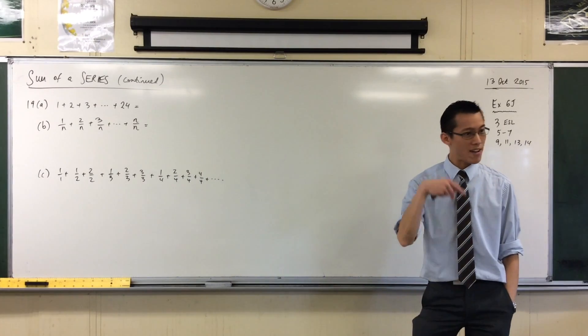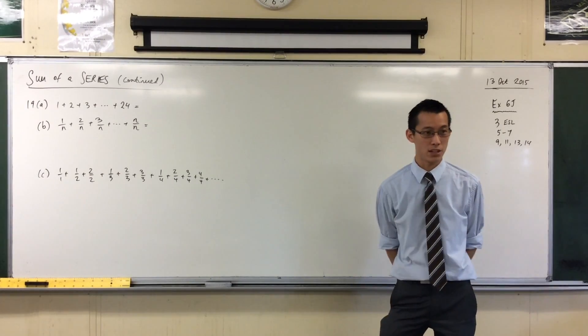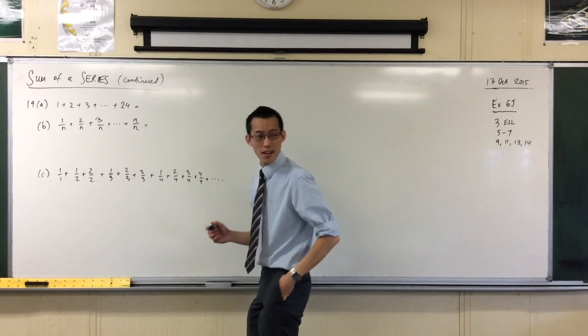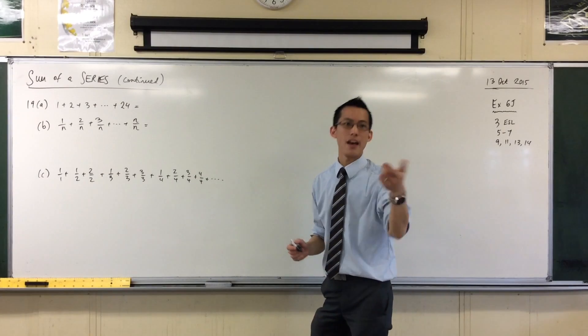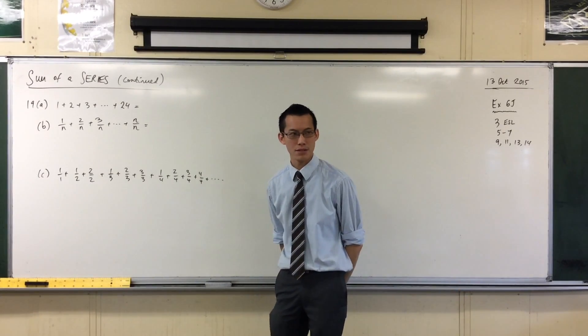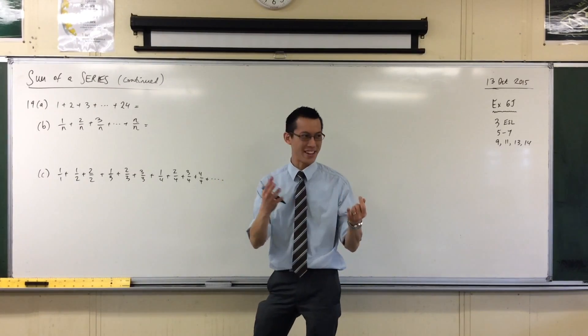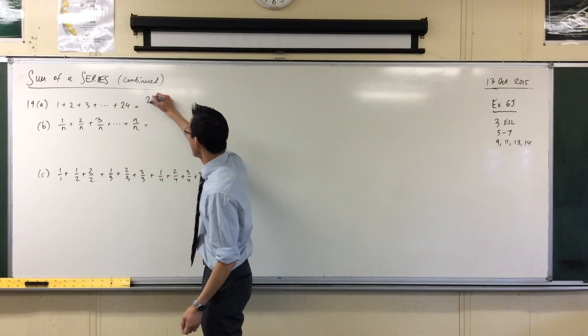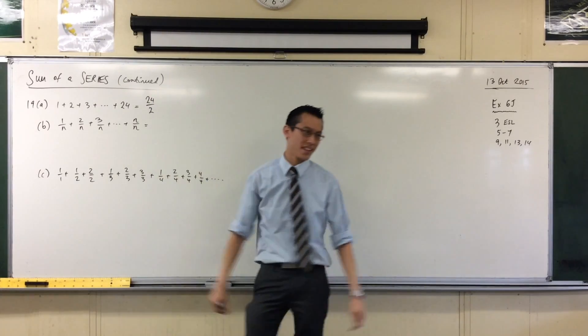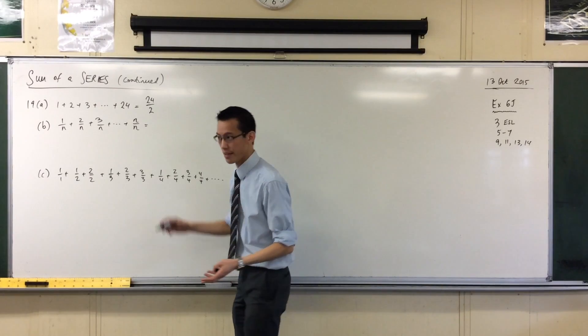Now because I have the first term and the last term, which formula am I going to use? We're going to use N on 2, A plus L, right? So how many terms are there in this series? 24. N on 2, there it is, right? And our first and last terms are 1 and 24.